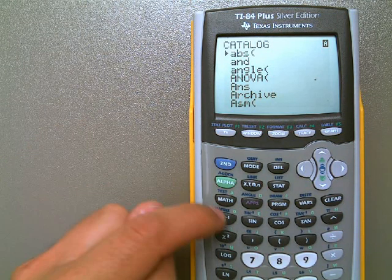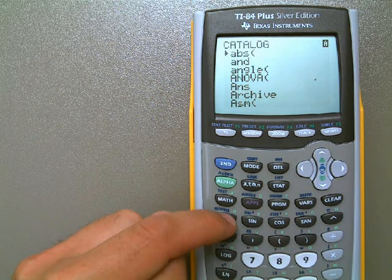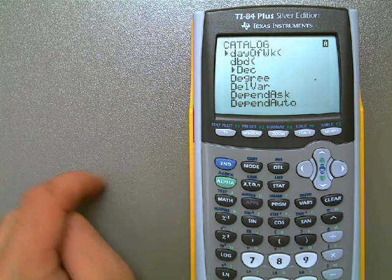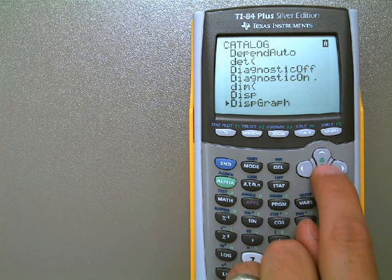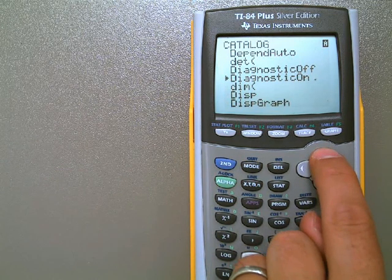I want to type in D, which is X to the negative 1 power. I'm going to hit D because it's going to take me right to the D's. Day of the week... I don't even know what that is. Okay, so I can come down here. I'm going to scroll down until I see something. There it is. It says Diagnostic On.